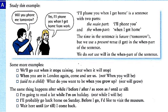The same rule applies after these time conjunctions: while, before, after, as soon as, and until. When referring to the future, we use the present tense. For example: 'I'm going to read a lot when I'm on holiday' — not 'when I will be on holiday.' 'I'll probably go back home on Sunday before I go' — not 'before I will go.' And 'wait until I come back' — not 'I will come back.'